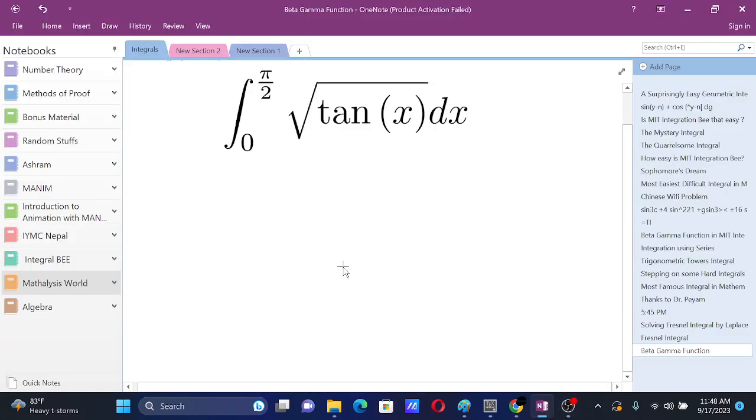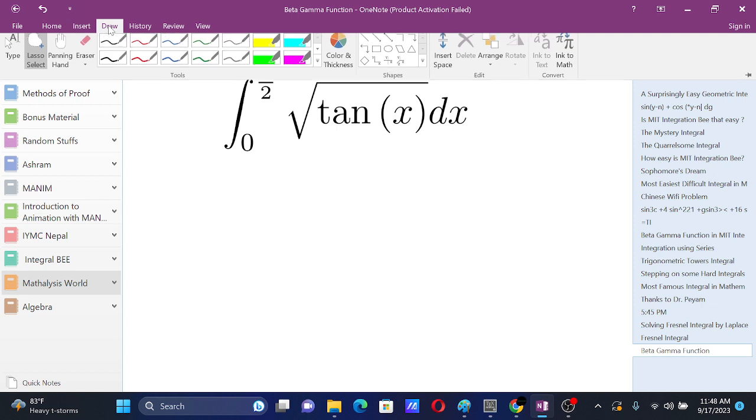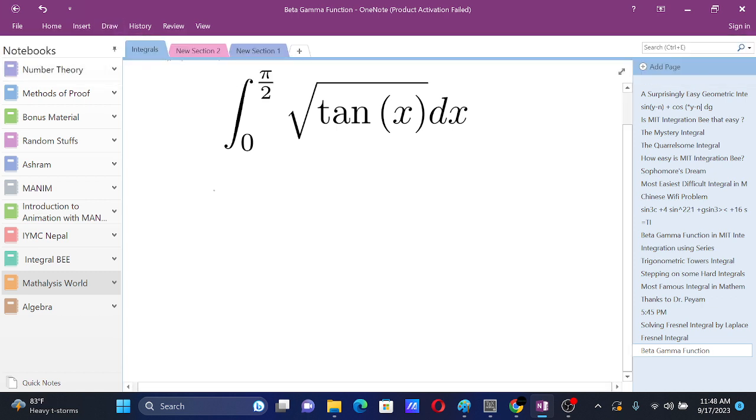The power of beta gamma functions: we have this integral from zero to π/2 of √tan(x) dx. Since we have the limits from zero to π/2 and tan x can be broken in terms of sine and cos, we see that this is an excellent application for beta gamma function.